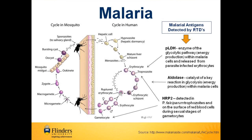The merozoites then re-enter the bloodstream, beginning a cycle of invading red blood cells, replication and then release of newly formed merozoites, repeatedly over approximately one to three days, depending on the species. This can result in thousands of parasite-infected cells in the bloodstream, leading to illness and complications of malaria that can last for months if not treated. It is at this point, where parasite-infected cells are released into the bloodstream, that the antigens can be detected. Some of the merozoites may develop into gametocytes, which if passed onto another human via a mosquito, can transmit the malaria infection.